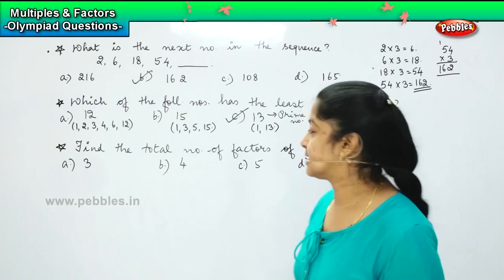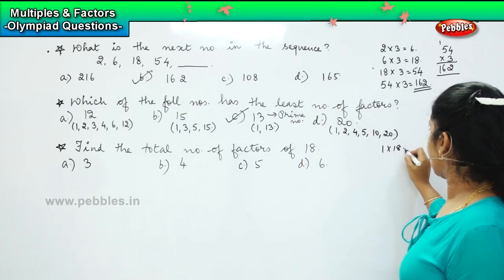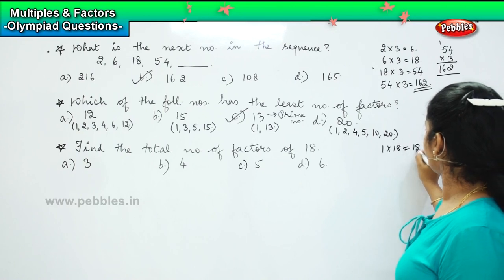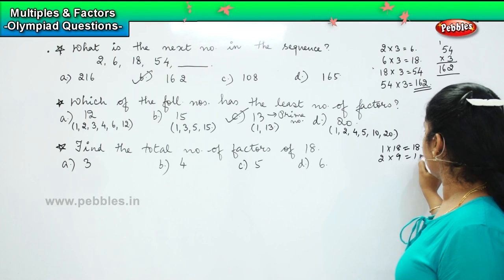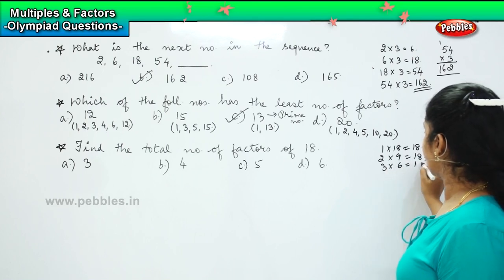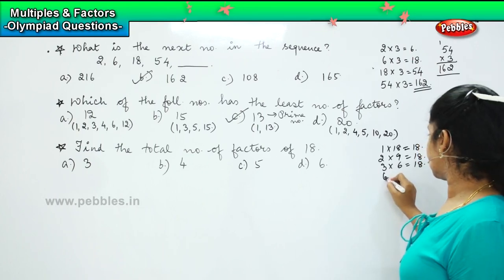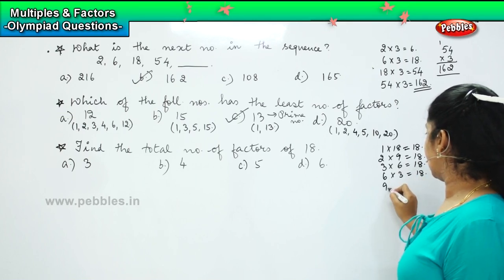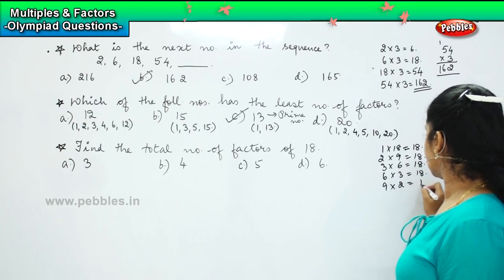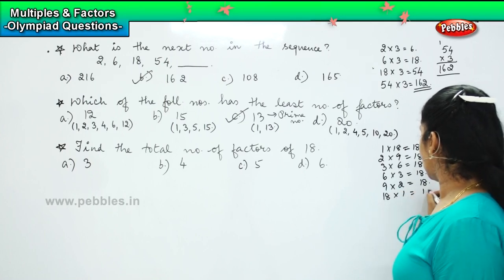Let us see how many factors there are for 18. We can say 1 into 18 is 18. Then 2 into 9 equals 18. Then 3 into 6 equals 18. 4 — we don't have. 5 — we don't have. 6 into 3 equals 18. 9 into 2 equals 18. And 18 into 1 equals 18.